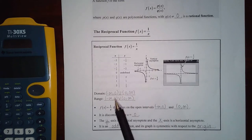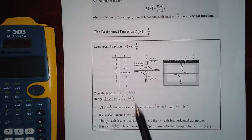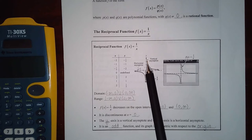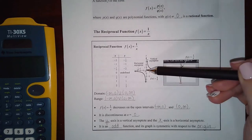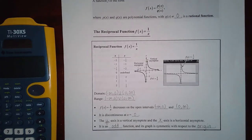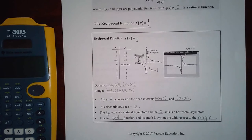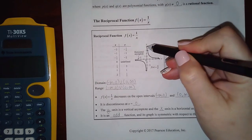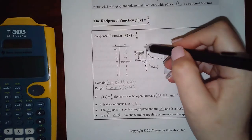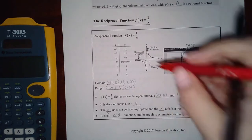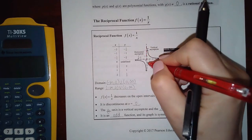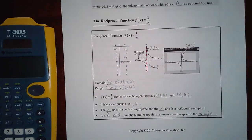There are parentheses around those zeros, not brackets. The function decreases on both intervals, and it has a discontinuity at zero because there's a break in the graph. The y-axis is what's called a vertical asymptote — an imaginary line that the graph never crosses.